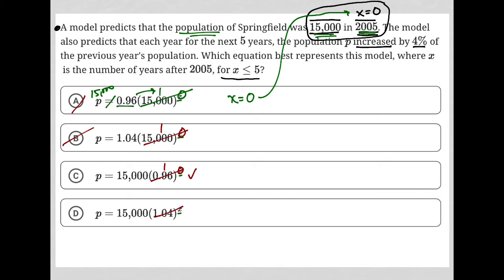For choice D, the same thing would happen. If I put 0 here, this becomes 1. 15,000 times 1 is also 15,000.